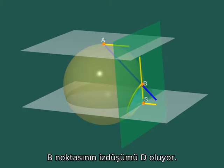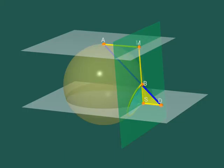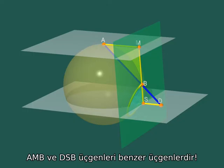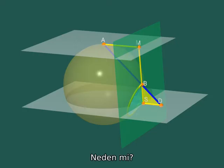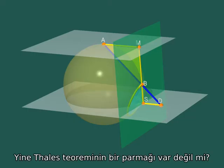The point B projects onto a point D. But look at the figure. The triangles A-M-B and D-S-B are similar. Why? Well, again, Thales' theorem. Do you agree?